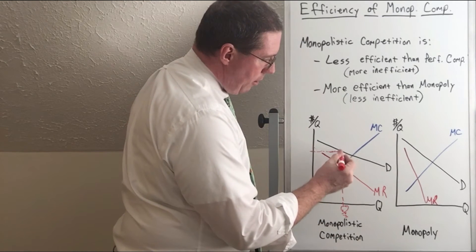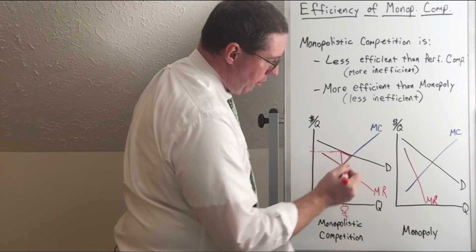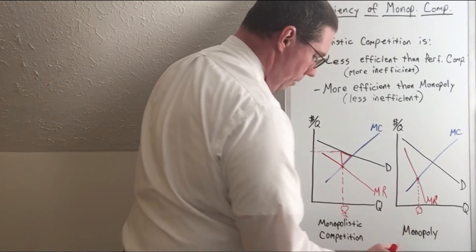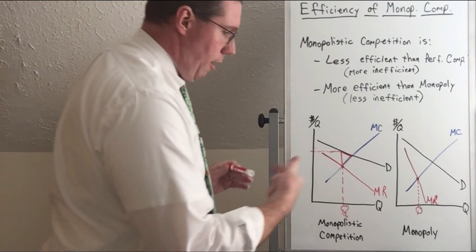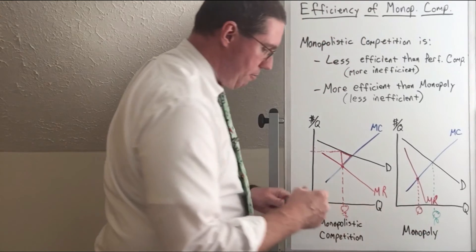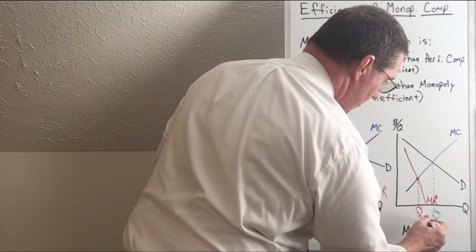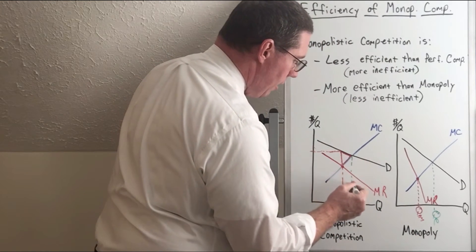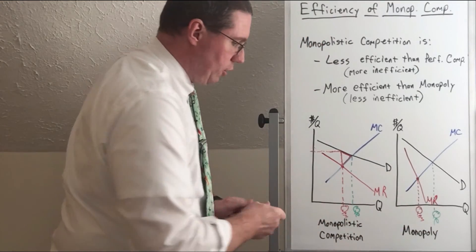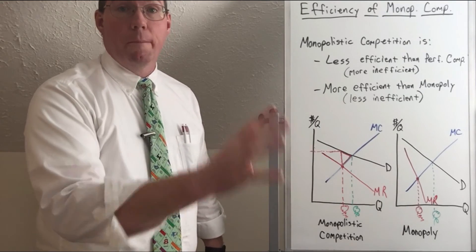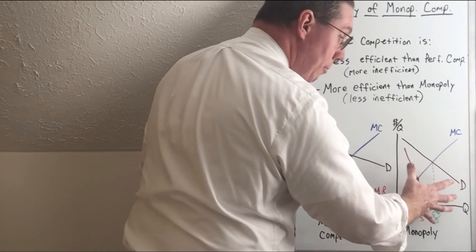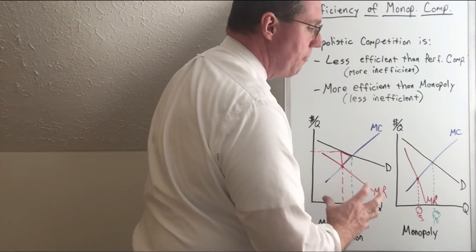Look at the dead weight loss produced by monopolistic competition. Now over here with monopoly, where marginal revenue is equal to marginal cost — remember that the marginal cost curve is essentially the supply curve, and for monopoly it's the supply curve for the whole industry. Look at that difference in equilibrium quantity versus profit maximizing quantity — that's a pretty big difference. The equilibrium quantity gap is much larger in the monopoly than in monopolistic competition. That's because monopolistic competition has a lot of similarities with perfect competition and shares some of that efficiency. But because monopolistic competition has a downward sloping demand curve in common with monopoly, it also shares some of the inefficiency of monopoly.